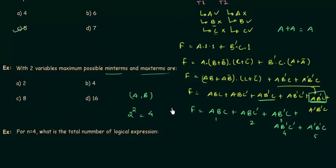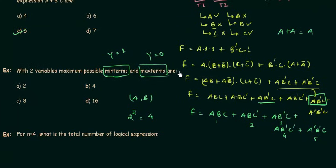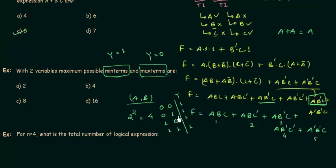With two variables we have four possible combinations: A complement B complement, A complement B, AB complement, and AB. We write min terms when the output is high and max terms when the output is low. If for all four input combinations the output equals 1, we have four min terms; if all outputs are low, we have four max terms. The question asks for the maximum possible, so the answer is four.